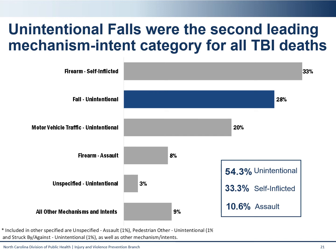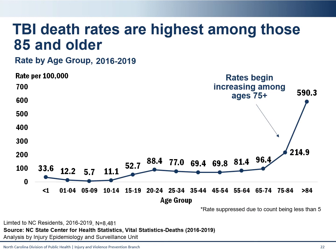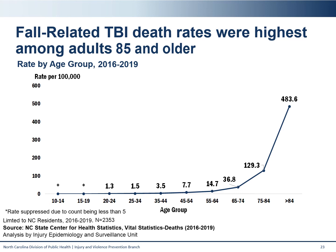When looking at TBI death rates by age, we see a similar trend to fall-related deaths in that the highest burden is among older adults. Rates begin to double at the 75 to 84-year-old age group, and almost triple when looking at the population of those over 84. Here, we specifically look at the intersection of fall-related deaths and traumatic brain injury deaths. We can see similar trends in that there is the highest burden among older adults, with over a three-fold increase in rate with age starting at age 74 and continuing to increase exponentially with age.